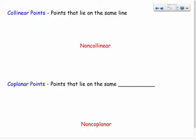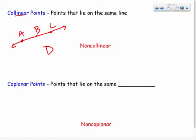We have a couple more terms: collinear and coplanar. Collinear means points are on the same line. If I have points A, B, and C on the same line, they're collinear. Point D, not on that line, would be non-collinear. Coplanar means points lie in the same plane. If they're not on the plane, they're non-coplanar.